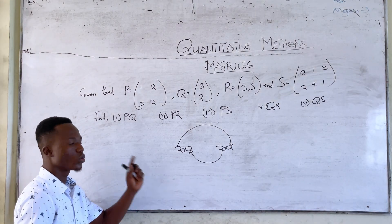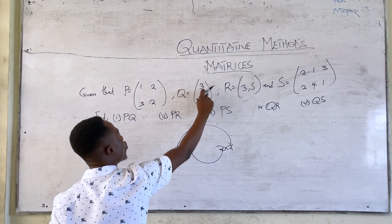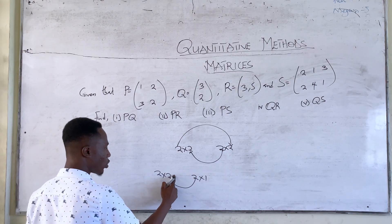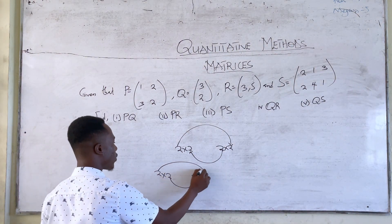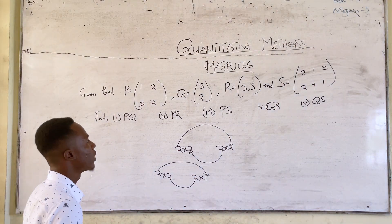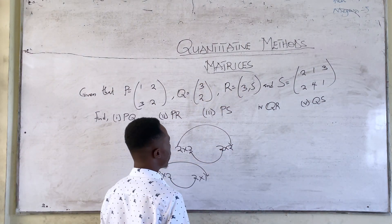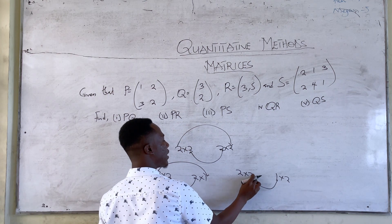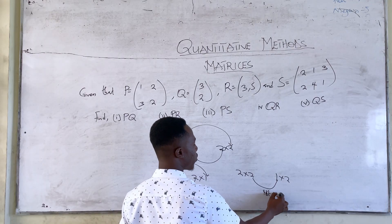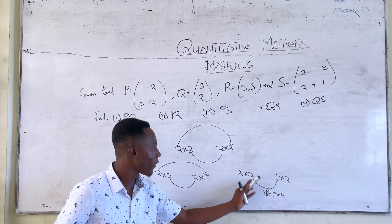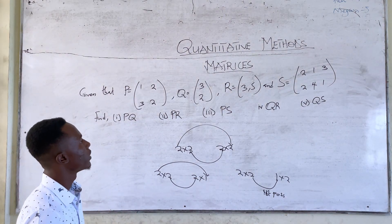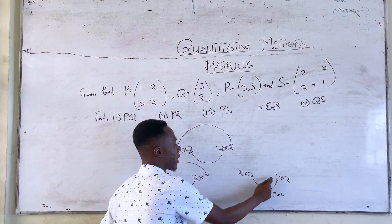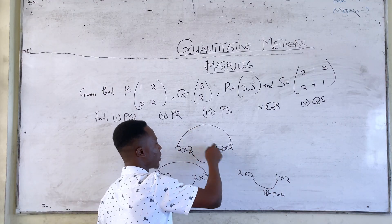This means it is possible, and the first and last numbers represent the result dimensions you are going to get. So at the end of your calculation, you have to get a 2×2 matrix. Then you have a 2×1 matrix — if you have a 2×2 matrix multiplying a 2×1 matrix, and this inner 2 equals this 2, the calculation is possible, and your final answer will be a 2×1 matrix. In a question, check whether the calculation can be possible; if it can, find your result.